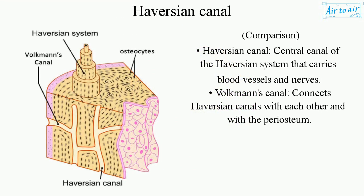Comparison — Haversian Canal: central canal of the Haversian system that carries blood vessels and nerves. Volkmann's Canal: connects Haversian canals with each other and with the periosteum.